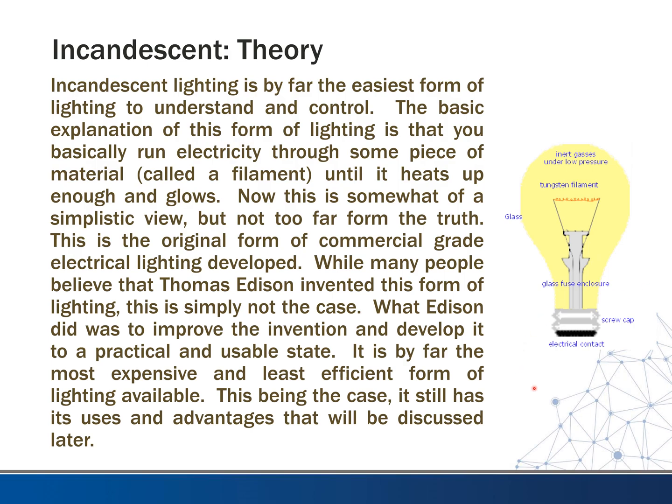So let's talk about incandescent. Incandescent lighting is by far the easiest form of lighting to understand and control. The basic explanation is that you run electricity through some material called a filament until it heats up enough and glows. This is somewhat of a simplistic view, but not too far from the truth. This is the original form of commercial-grade electrical lighting developed.